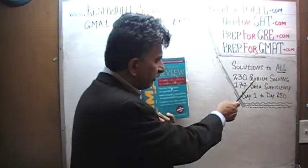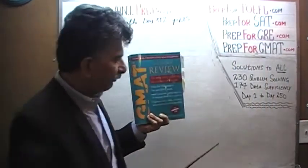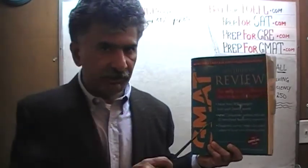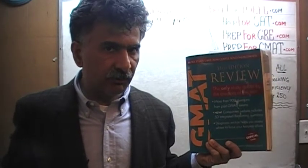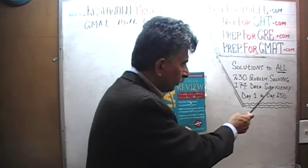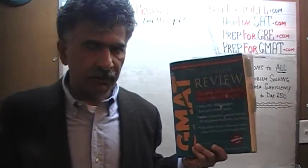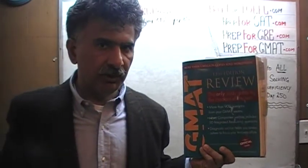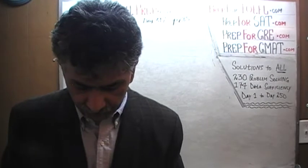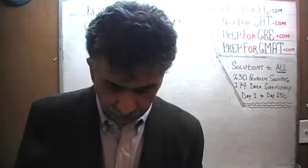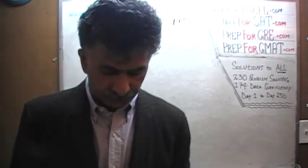The book contains 230 problem solving questions and 174 data sufficiency questions. We have solved every single math problem from this book. If you are interested in watching any of the original solutions, you will find them for day number 1 through 250. Right now we are in the process of redoing the problems and we are on page number 285. Please turn to it. The very first problem in the second column is number 116.